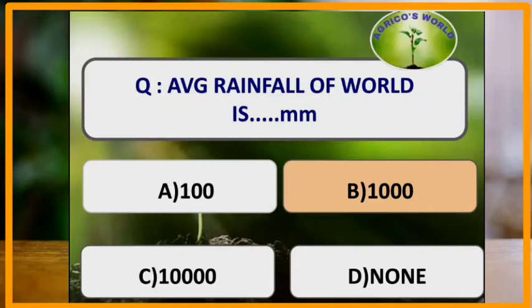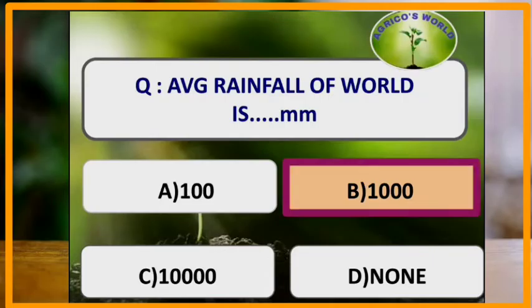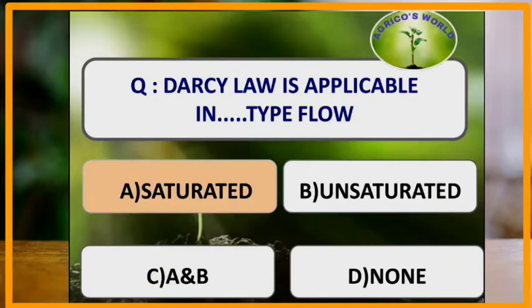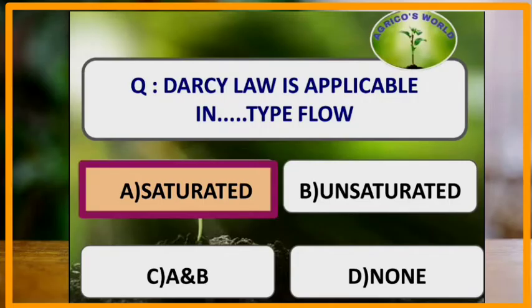The average rainfall of the world is 1000 mm, and that of India is 1194 mm. The total quantity of rainfall received in India is 400 million acre-hours by volume.